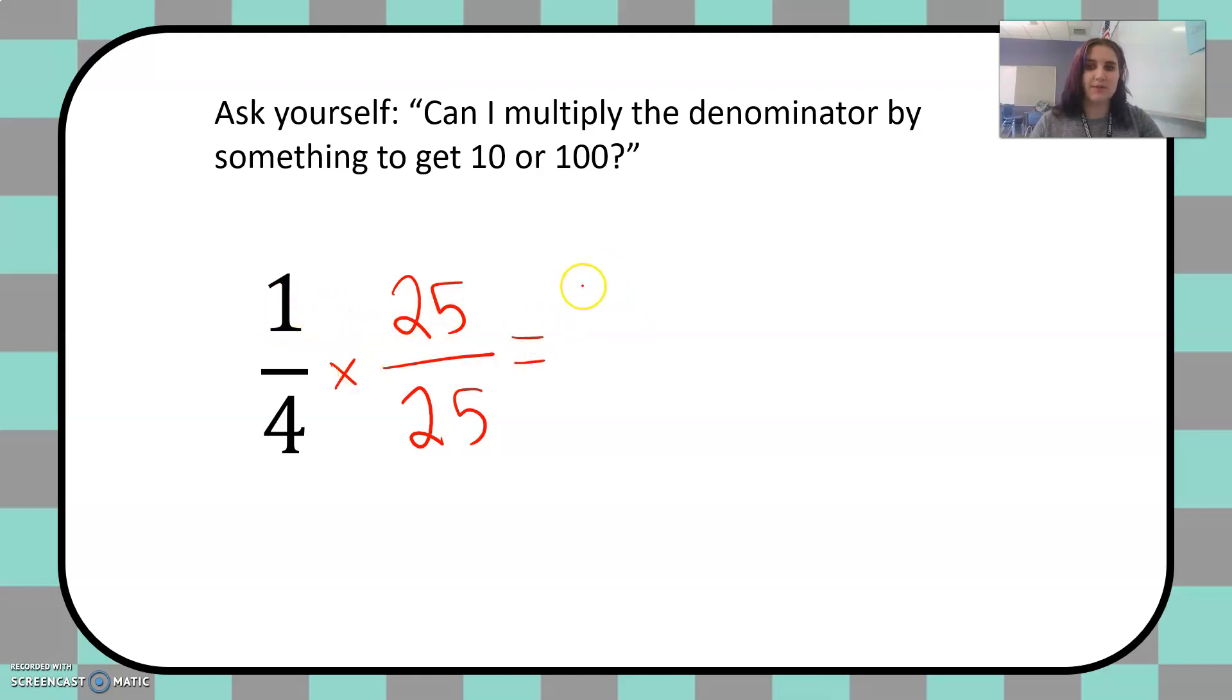One times 25 is 25 and four times 25 is 25. Oh no, sorry. Four times 25 is 100. And now I have the fraction 25 hundredths, 25 over 100. And from our other lesson we learned that we can write this as 0.25.